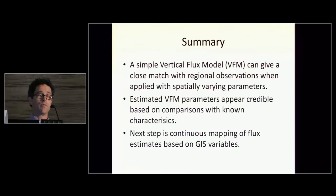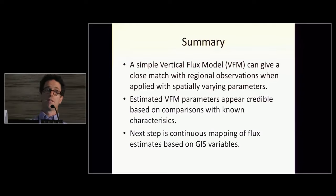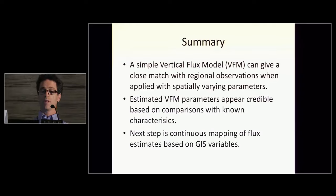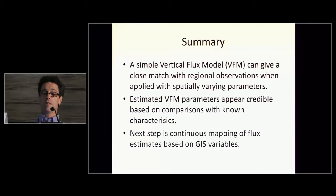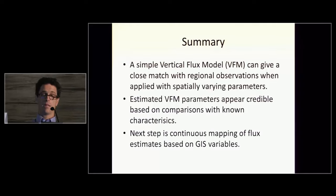To summarize: the simple vertical flux model can give a close match with regional observations when applied with spatially varying parameters — not so much when using uniform parameters, at least in Wisconsin, which has pretty heterogeneous land use. The parameters we're getting out of the model appear credible based on comparisons with known characteristics such as GIS variables and known input functions of nitrogen. The next step is continuous mapping of this regional flux model across the entire area using these correlations between GIS parameters and vertical flux model parameters.